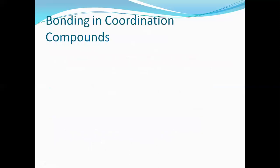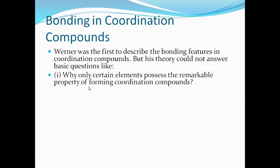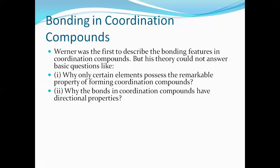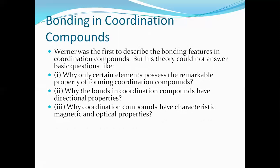Once we know the complex, there is a bond between the central metal atom and the ligands. What type of bond is present and how it exists can be studied in bonding in coordination compounds. Earlier theories could not answer basic questions like: why do only certain elements possess the property of forming coordination compounds, and why do bonds in coordination compounds have directional properties?